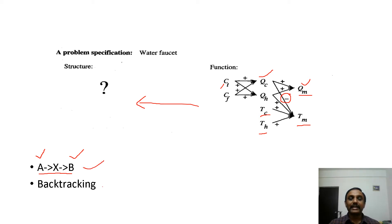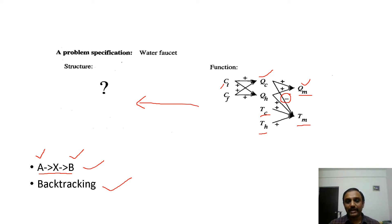Backtracking is also allowed in case-based reasoning. If a particular design is not available in the repository, a new design is created. However, if any errors occur while creating that new design, the system must go back and reconstruct everything from the beginning. This process is called backtracking, and it is permitted in case-based reasoning.